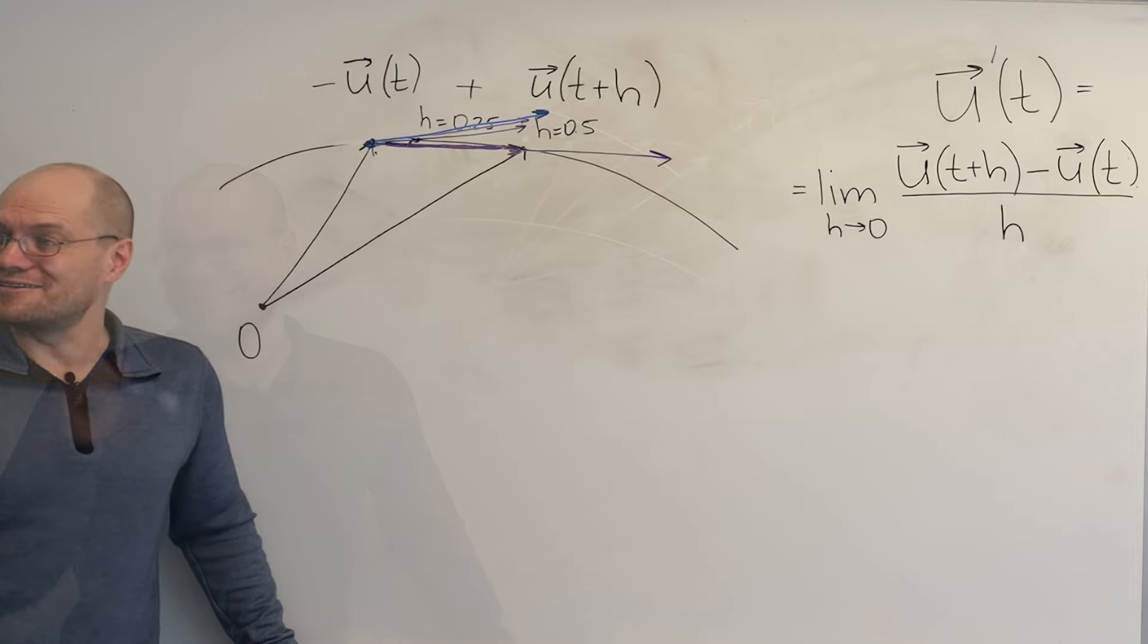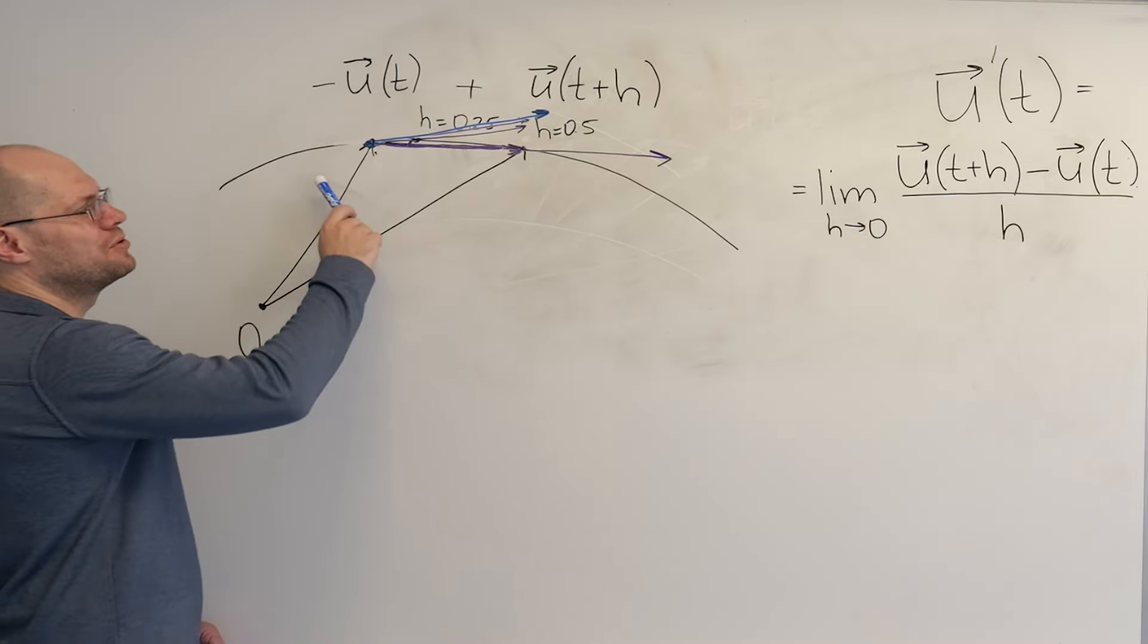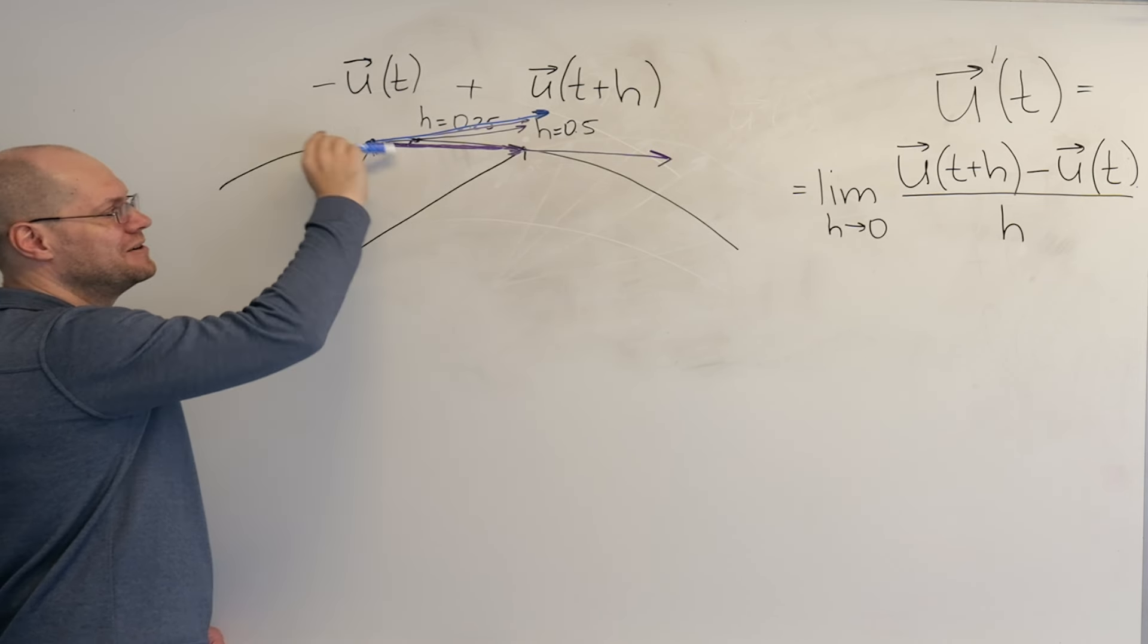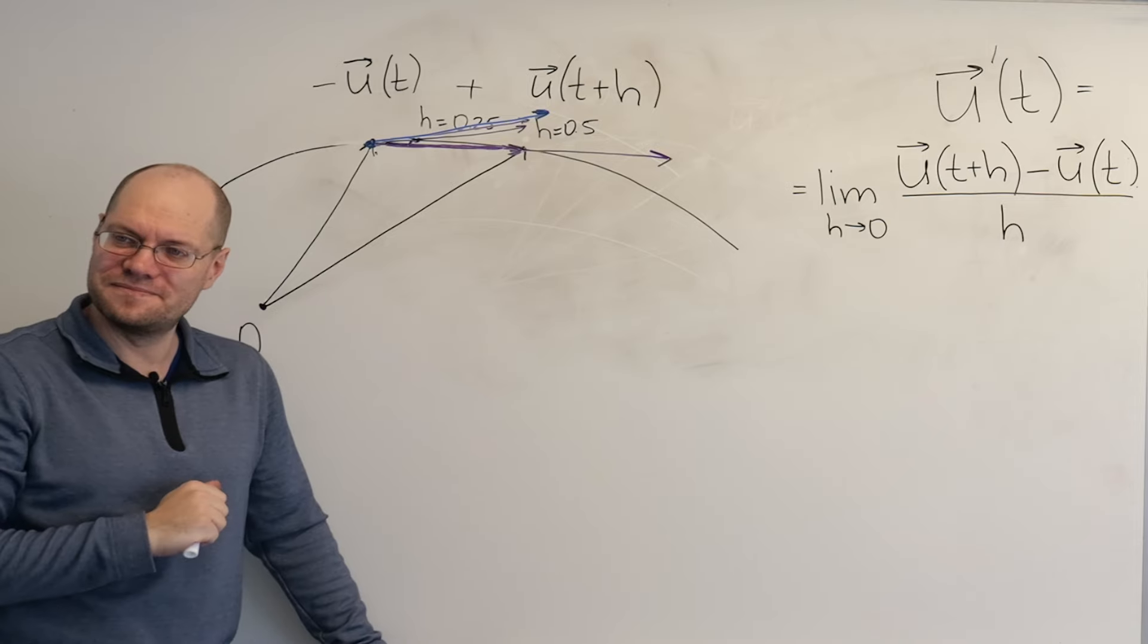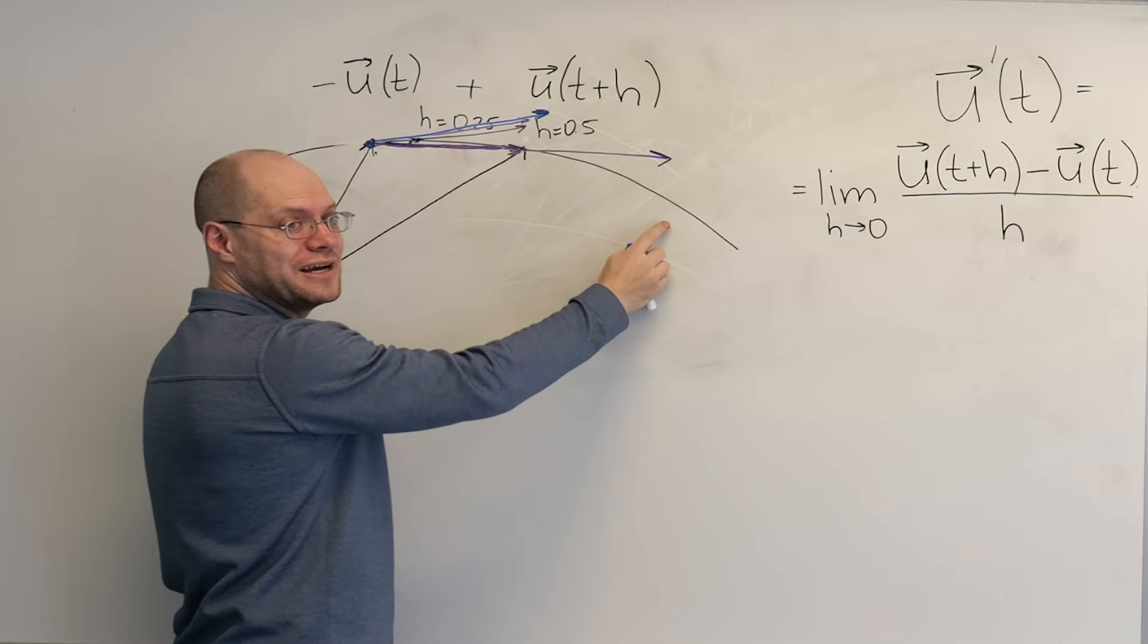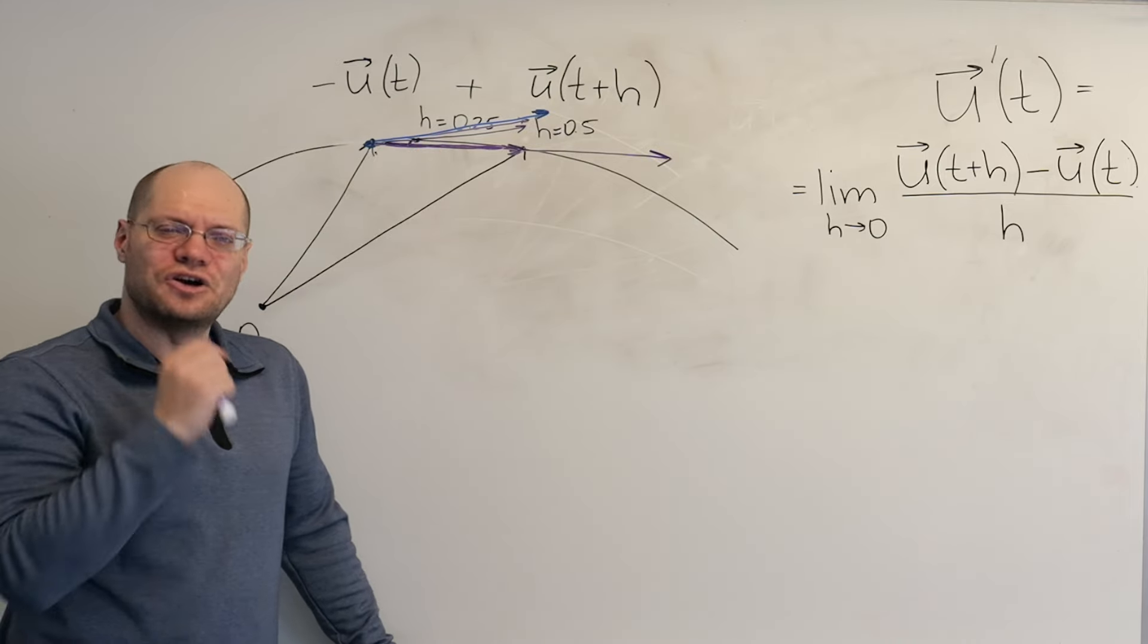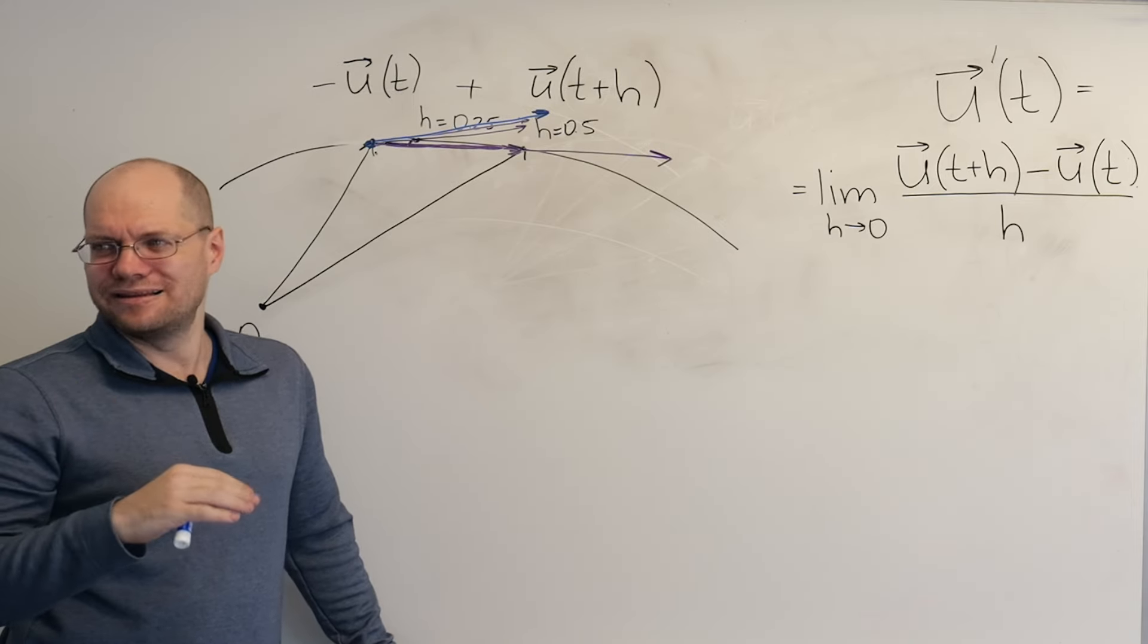So, the arbitrary origin doesn't matter. Does the parametrization matter? So, maybe the easiest way to convince you of that is if the parameter increased in this direction as opposed to in this direction, that at the very least the arrow would point in the opposite direction. Do you agree with me? If t, the way we did it, t was growing from left to right. But if t is increasing from right to left, then the blue vector would point in that direction. So, that alone tells you that parametrization matters at least a little bit.